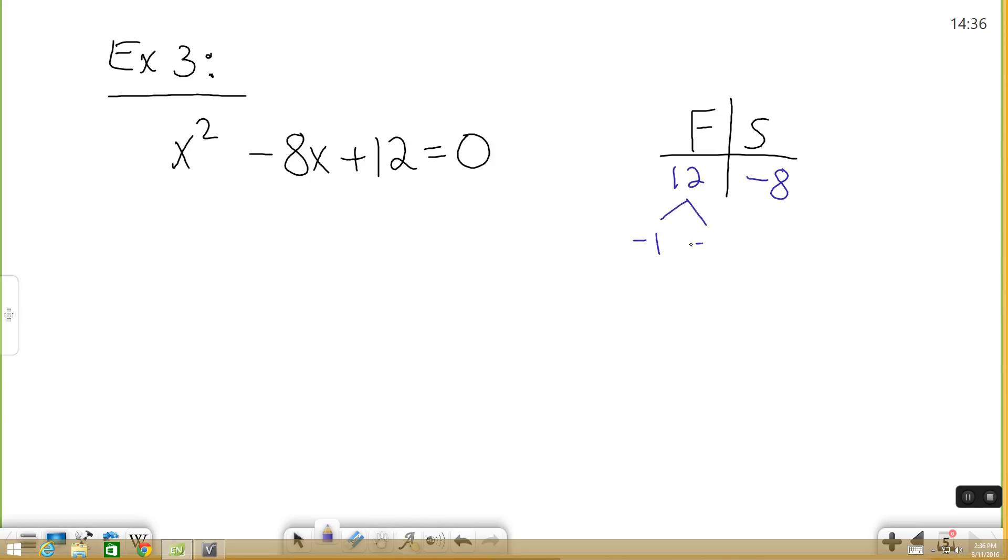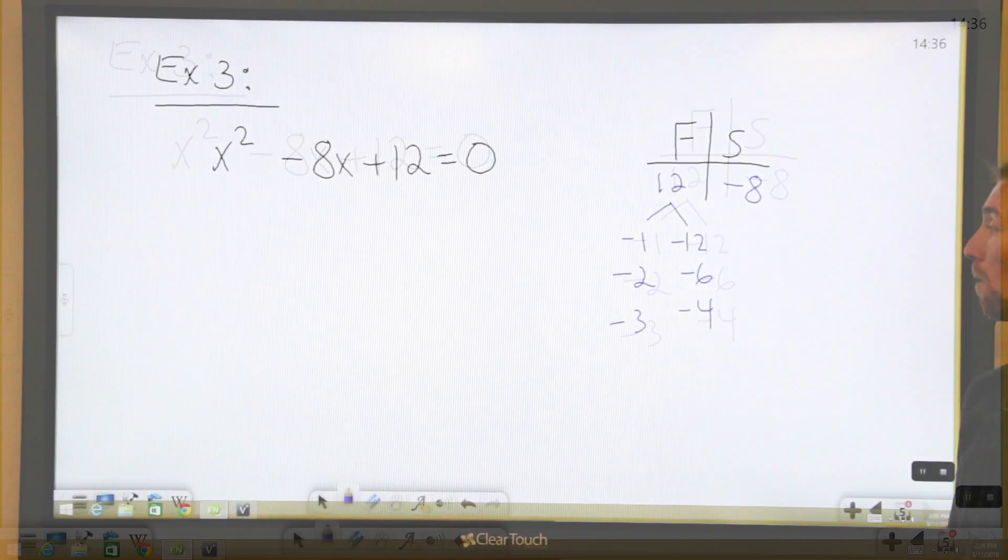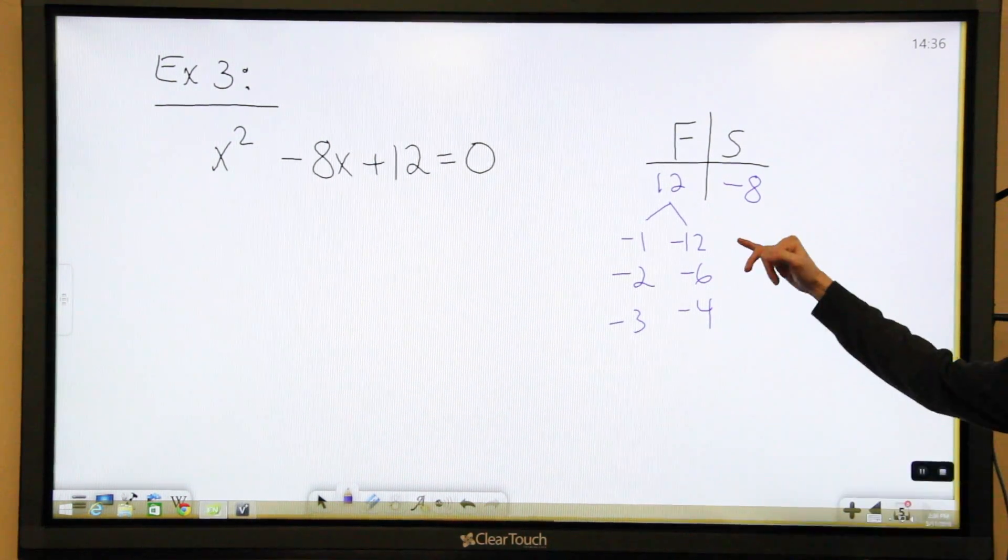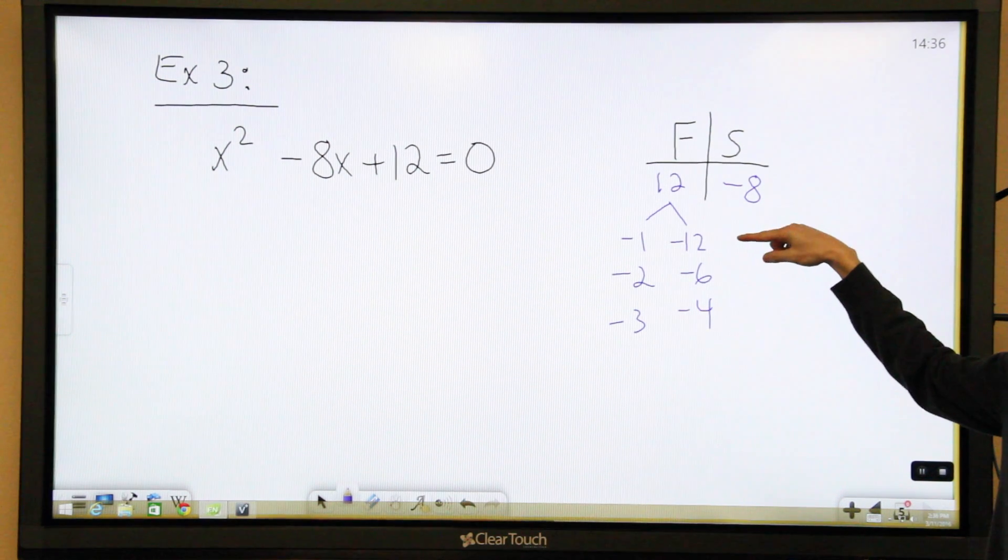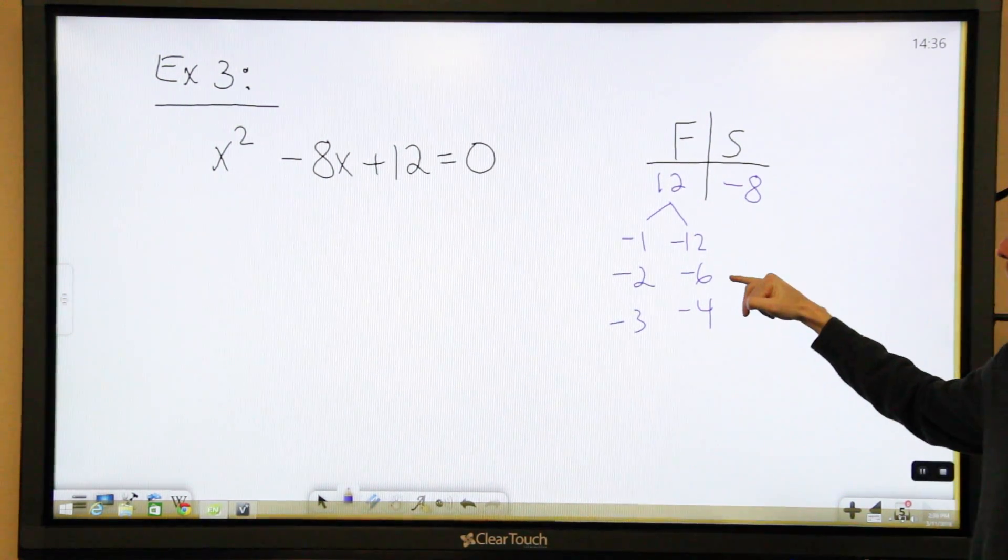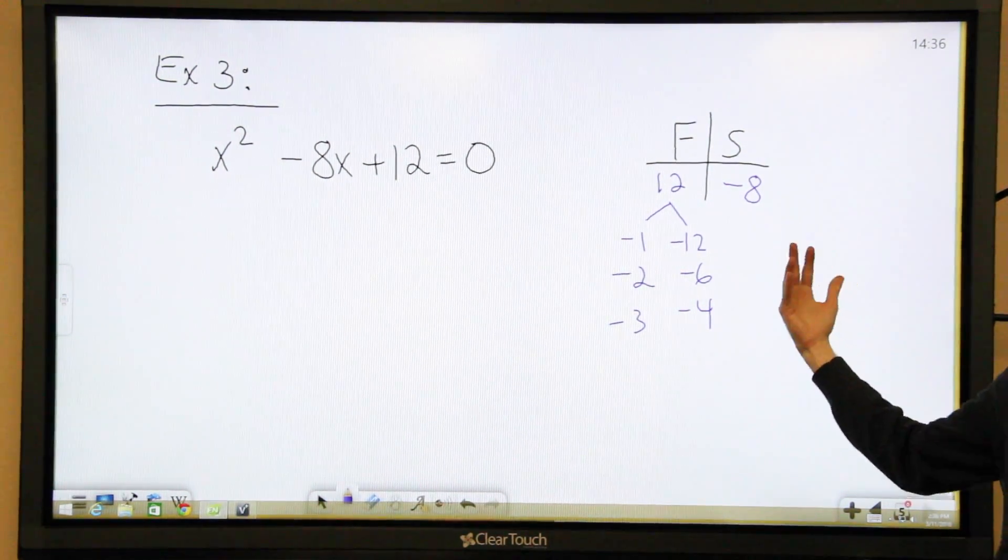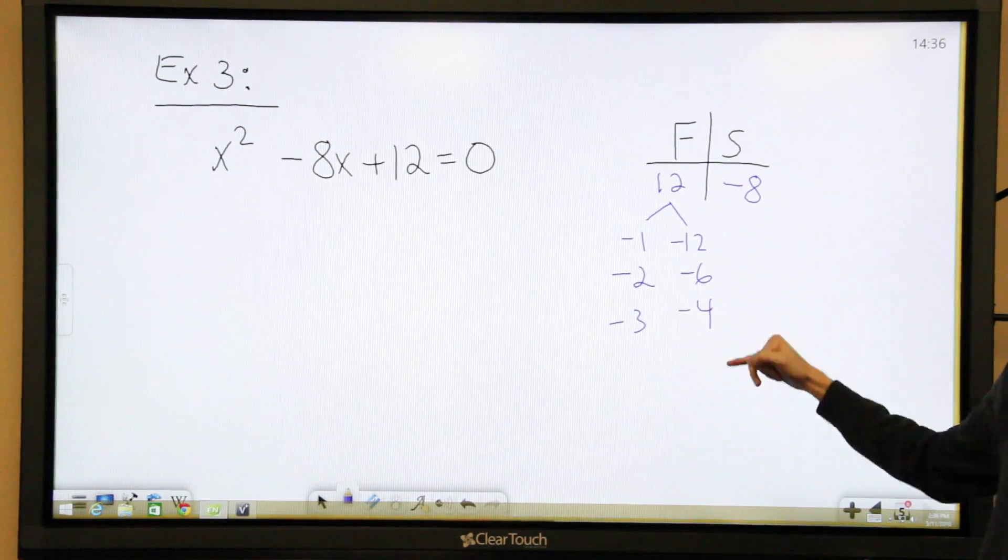So, let's look at the factors and make them both negative. We have 1 and 12. We have 2 and 6. And we have 3 and 4. So, go through and figure out which ones add up to negative 8. Negative 1 plus negative 12 doesn't work. Negative 2 plus negative 6, that does work. So, these are the numbers we need to use. Negative 2, negative 6.